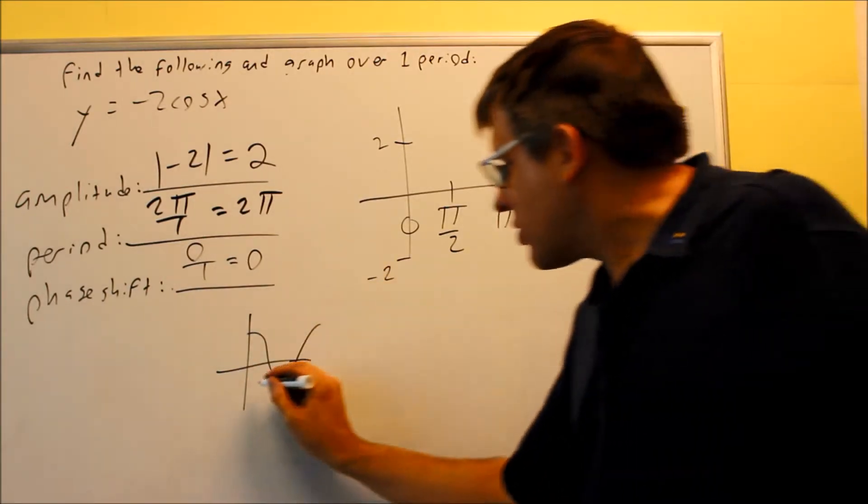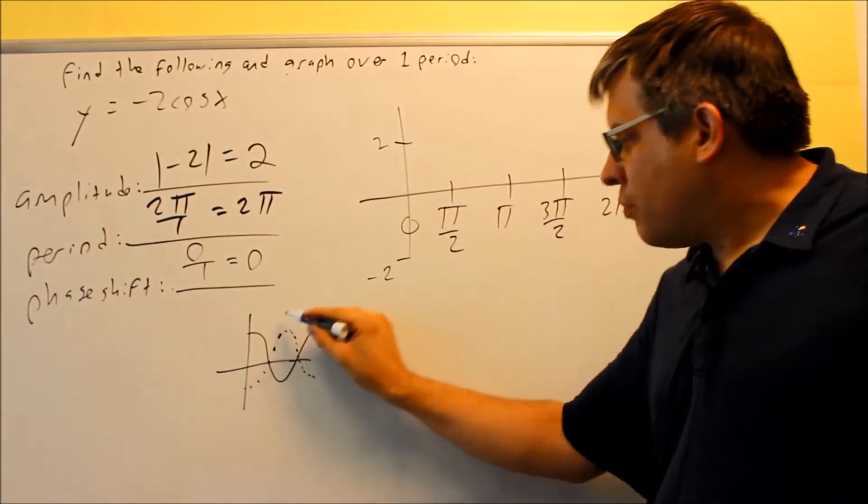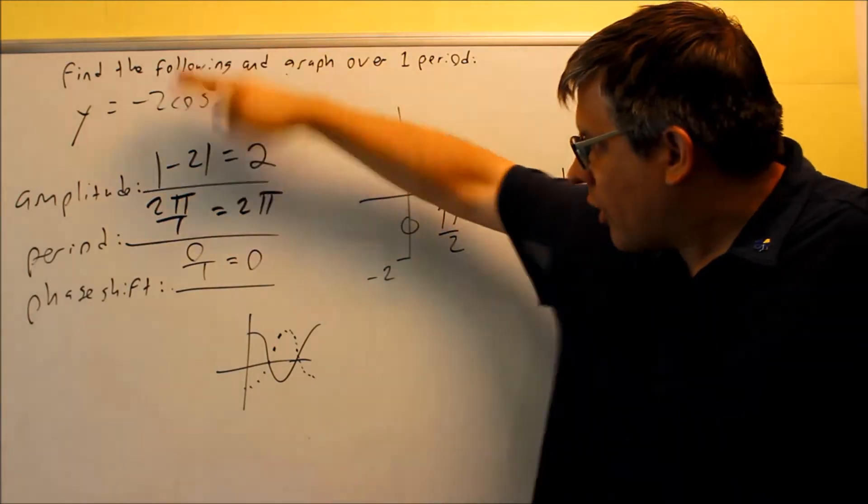So if that flips, the graph is actually going to look like this. It's going to be like a bell shape there. It's going to be upside down. That's what it will do when I flip it.